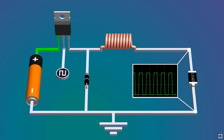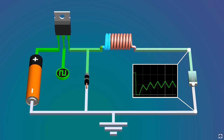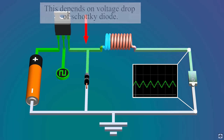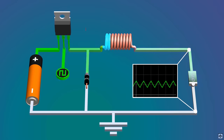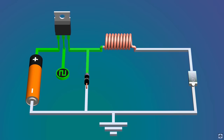The voltage at the load still has high voltage spikes, so we increase the frequency of the PWM signal such that the voltage and current through the inductor remain somewhat stable. This is also the reason why switch mode power supplies use high frequencies.